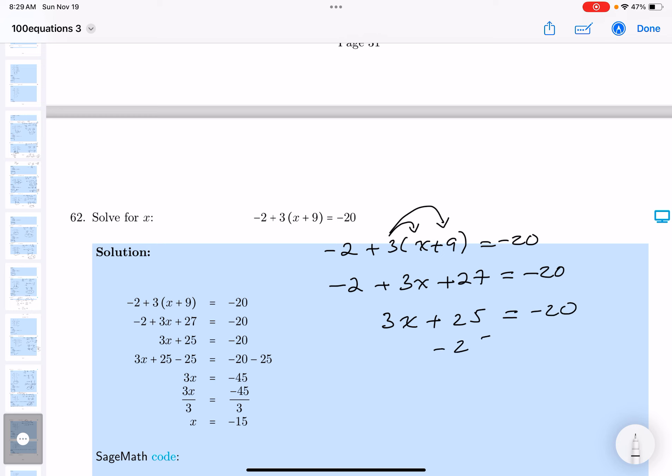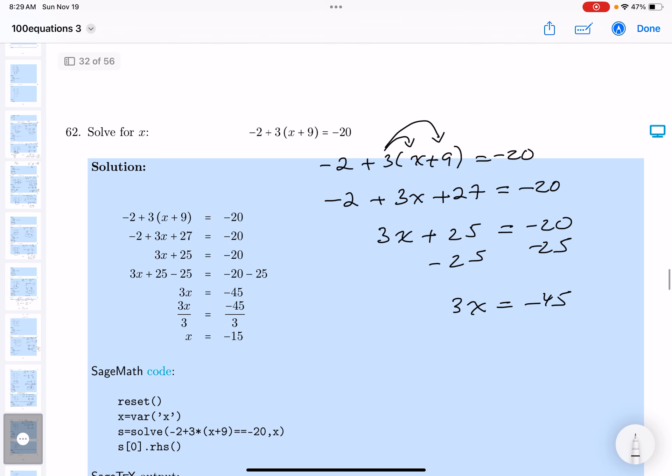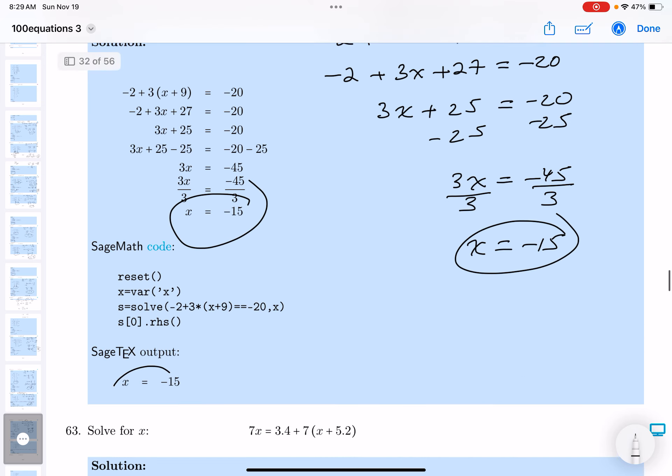I would subtract 25 from both sides, and you would get 3x is minus 45. Then I would divide both sides by the variable's numerical coefficient, which is 3, and you would get x equals minus 15. And we're done.